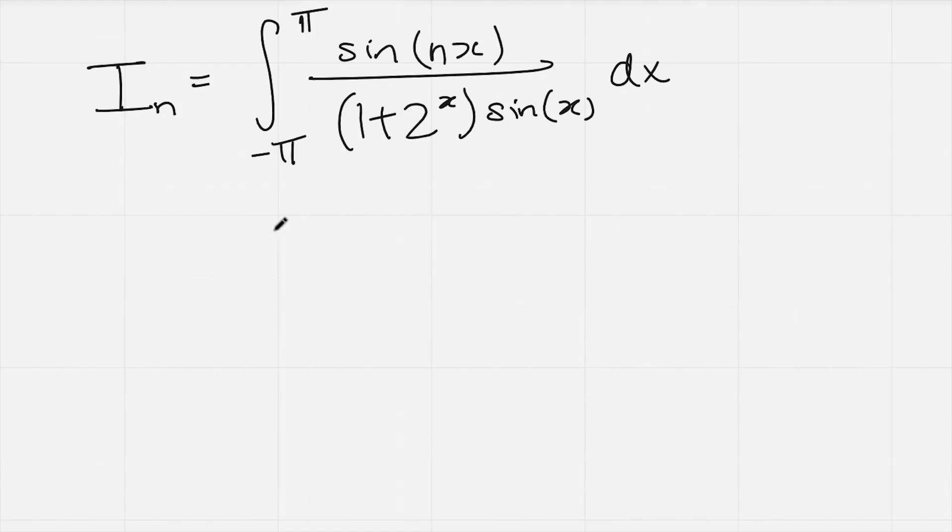What I'm going to do is split this up into two integrals. So I'm firstly going to integrate it between minus pi and zero and then I'm just going to add on the integral from zero to pi of this thing. I'm not going to bother to write it out twice.